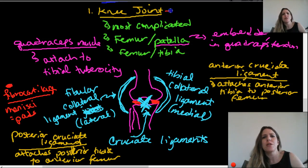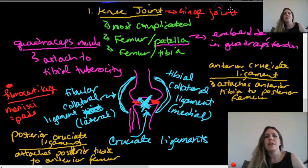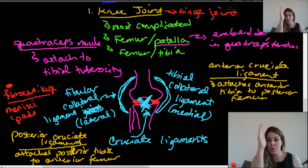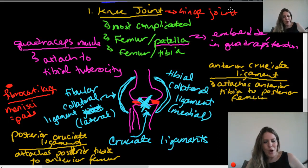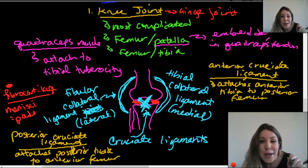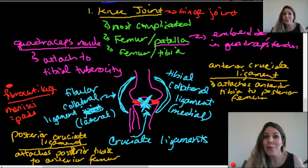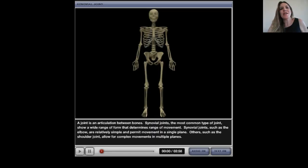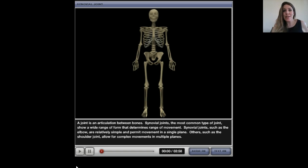The knee is a hinge joint that allows movement basically in one plane — you don't want to overextend it. Let's go ahead and take a picture of it and do a virtual dissection.